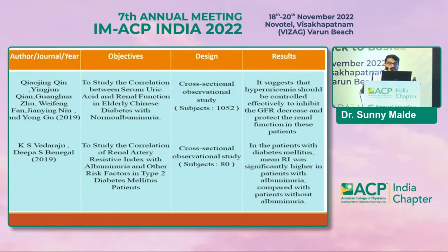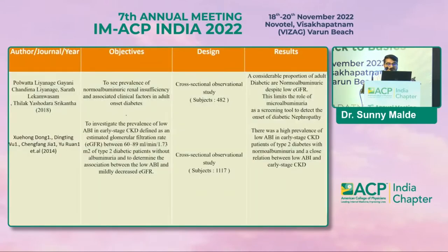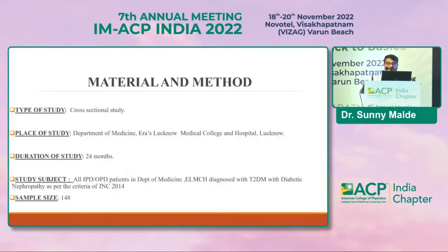These are the various reviewed literature. Four papers were reviewed showing the relationship of various factors — renal resistivity index, uric acid, and ankle brachial pressure index — to diabetic kidney disease.